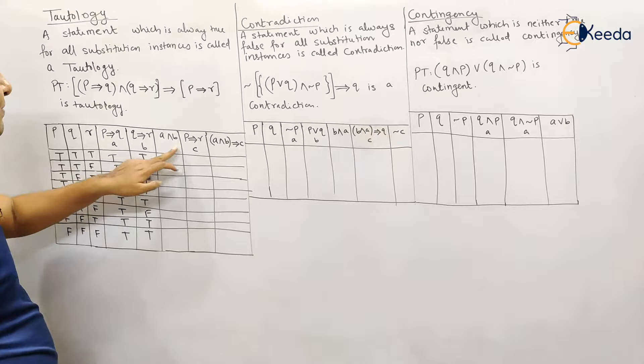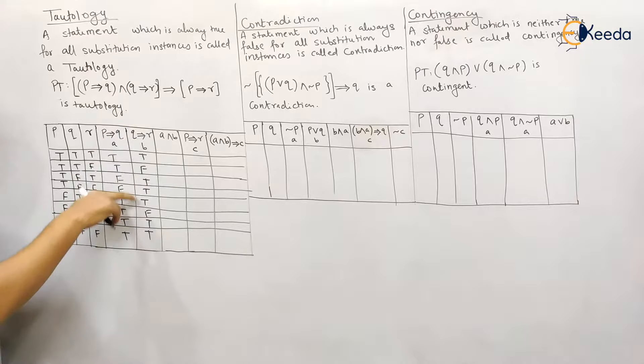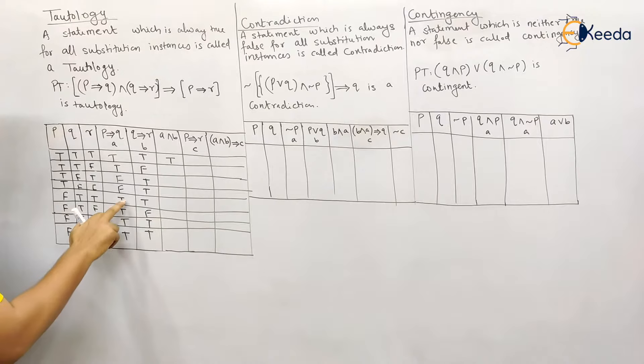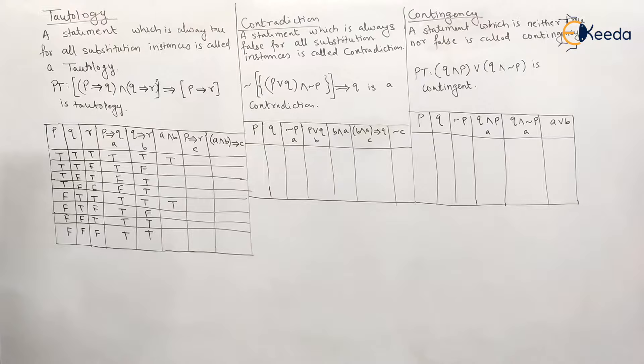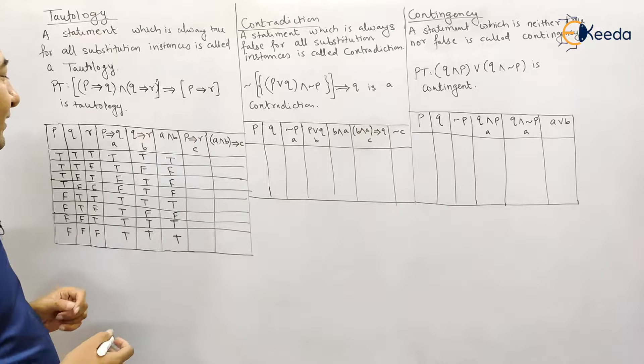For convenience, let's call the p→q column A and the q→r column B. Now we need to find A and B — the conjunction of these two statements. True and true is always true. Checking: both are true → true; both are true → true; both are true → true; both are true → true. All remaining combinations give false.